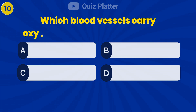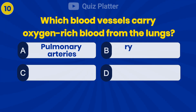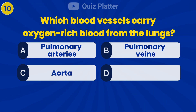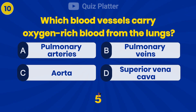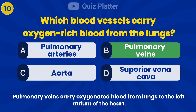Which blood vessels carry oxygen-rich blood from the lungs? Answer B: Pulmonary veins.